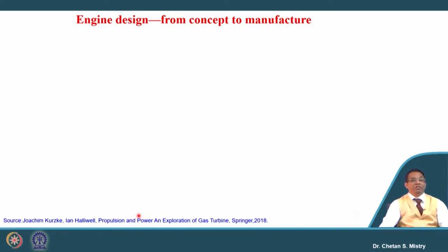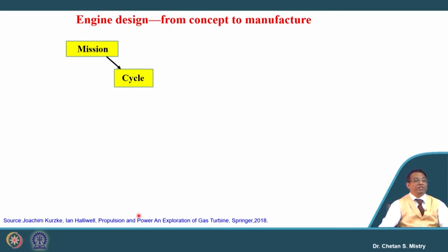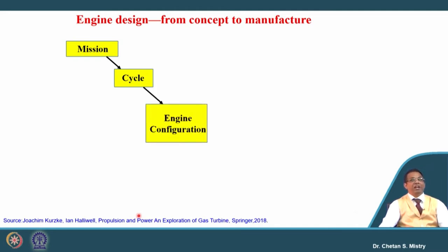Let us review what was discussed in our very first lecture. This course is aero engine gas turbine cycles. In that, we discussed the requirement floated by airline companies in terms of mission — or if it is a fighter plane, the air force gives the mission requirement. Based on that mission requirement, the very first step is thermal cycle analysis. We discussed almost all possible engines: turbojet, turbofan, turboprop, and turboshaft engines. This cycle analysis helps in configuring the engine.